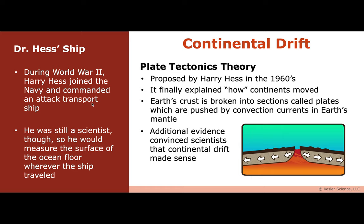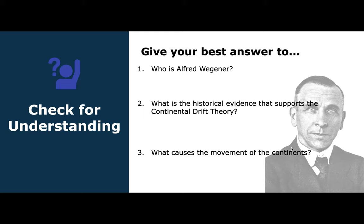Let's talk about plate tectonics, proposed by Harry Hess in the 1960s. He joined the Navy and would measure the ocean floor with his ship. This explained how the continents moved — he was the missing link. It showed that Earth's crust is broken into sections called plates, which are moved by convection currents. This additional evidence showed scientists that Wegener might have been right. We should have listened to him.